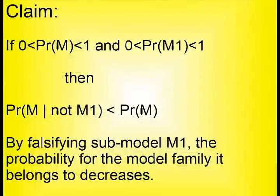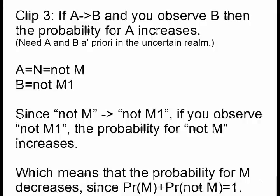The claim is now that having a sub-model falsified is bad business for the model. More specifically, if model family M is uncertain to begin with, and one of its sub-models — let's call it M1 — which is also in the realm of uncertainty, is falsified, the probability for the big model decreases. This is simply the principle in clip 3 used for negative statements.